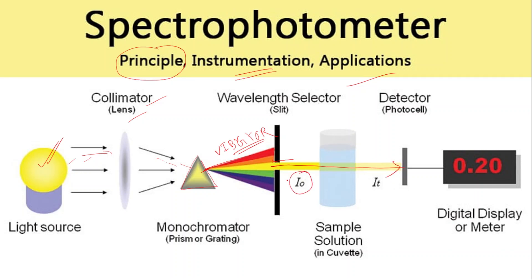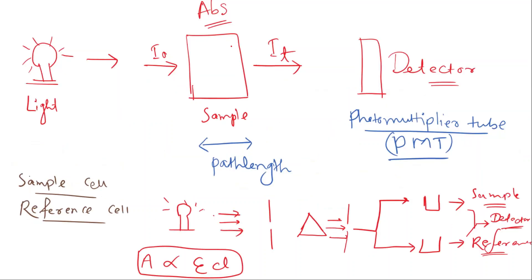Here we have the incidence light hitting the sample. A certain amount of light is absorbed by the solution. The remaining light passes through to the detector, which records the digital absorbance value.